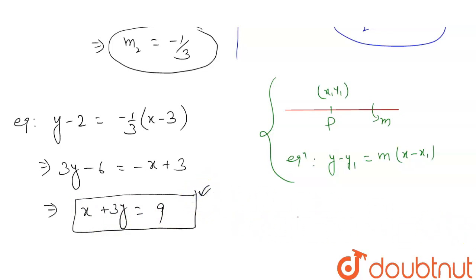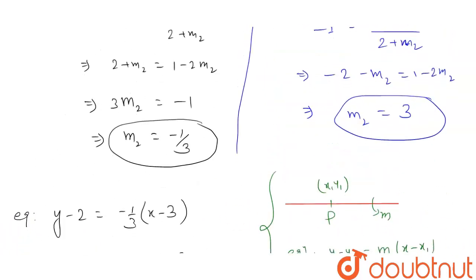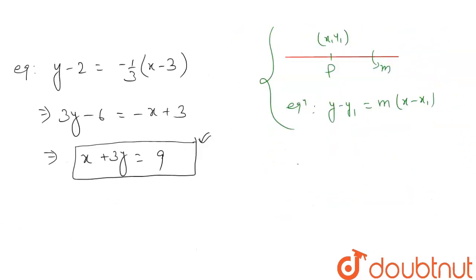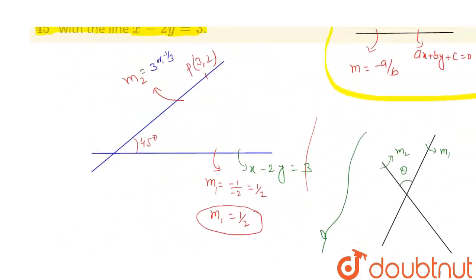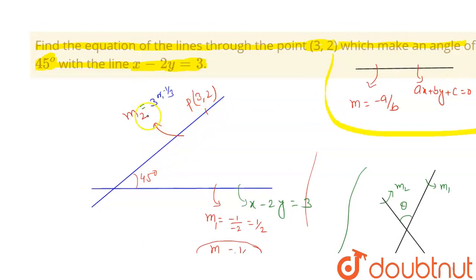The second equation uses m2 equals 3 and the point (3, 2): y minus 2 equals 3 times (x minus 3), which gives y minus 2 equals 3x minus 9, or 3x minus y equals 7. This is the second equation of the required line.